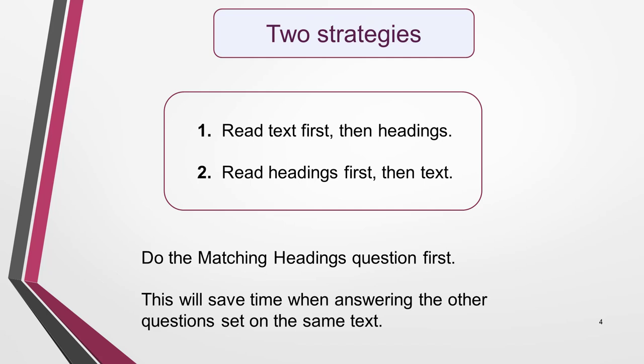There are two possible strategies for answering these questions. First, read the text first, then the headings. Second, read the headings first, then the text. Some teachers will tell you to always read the text before you look at the headings, while others say you should definitely read the headings first. Personally, I think the first strategy — text first, then headings — is the easiest. However, my advice is to try both when you're practicing to see which one works best for you. Different people process information in different ways, so one method may suit you better than the other.